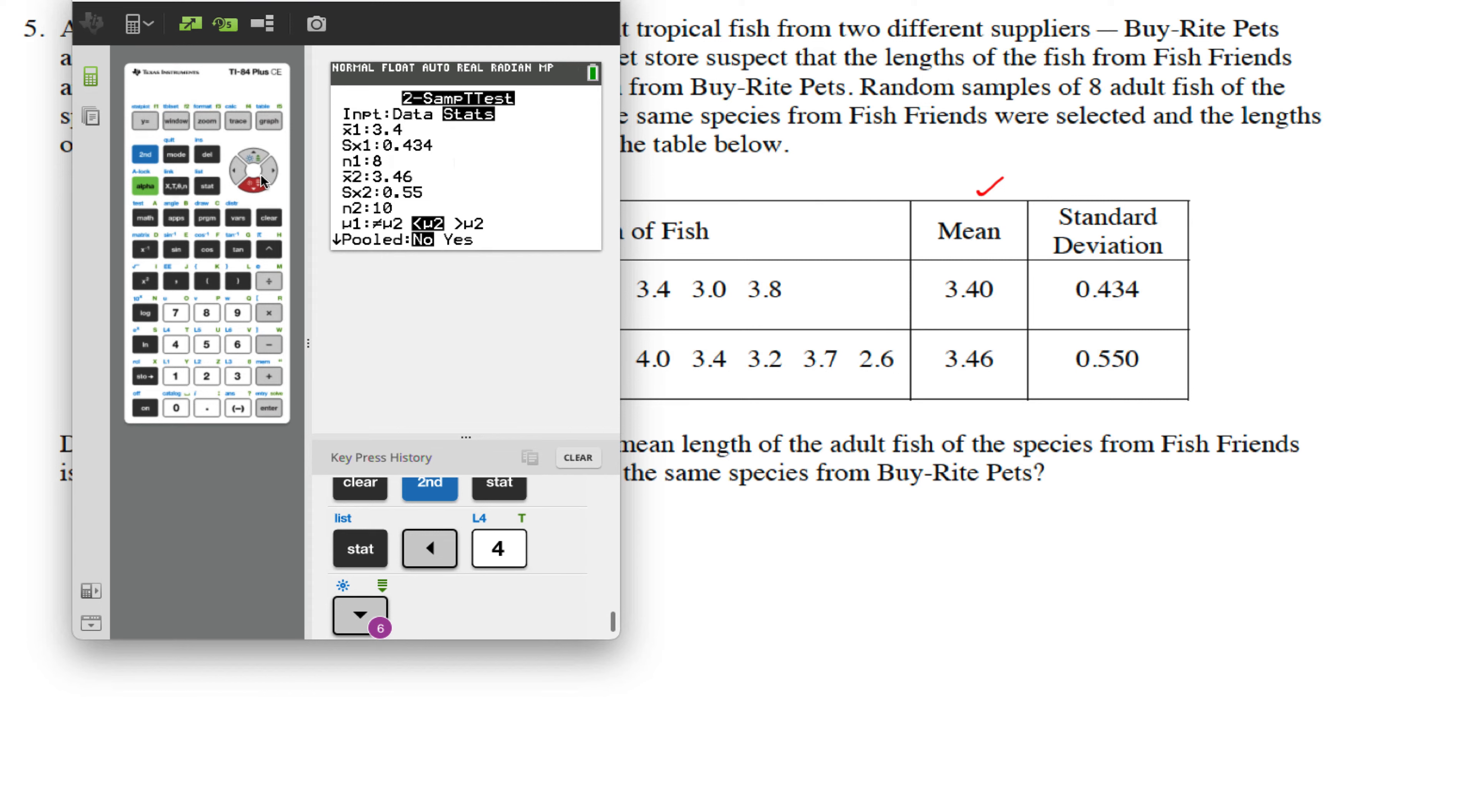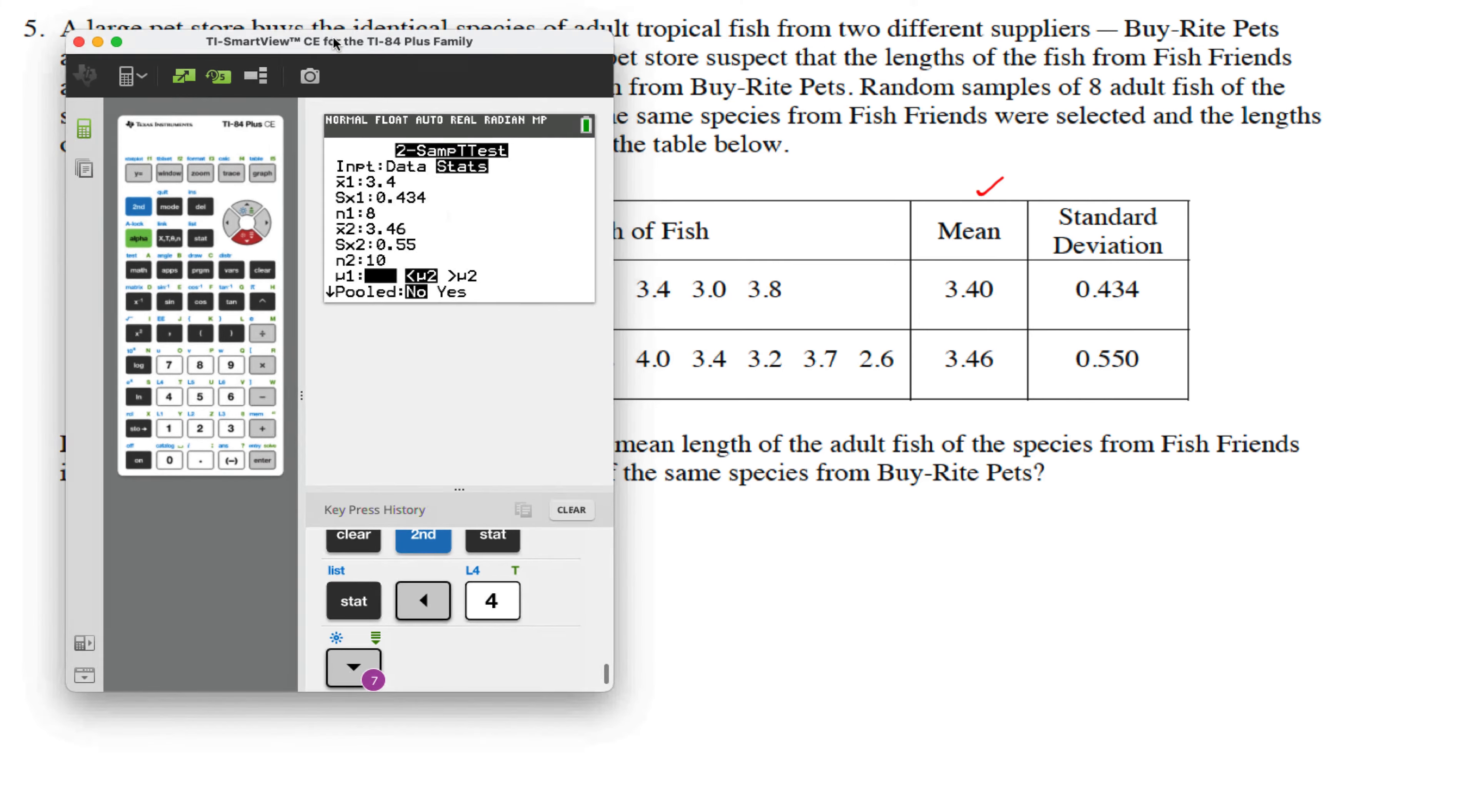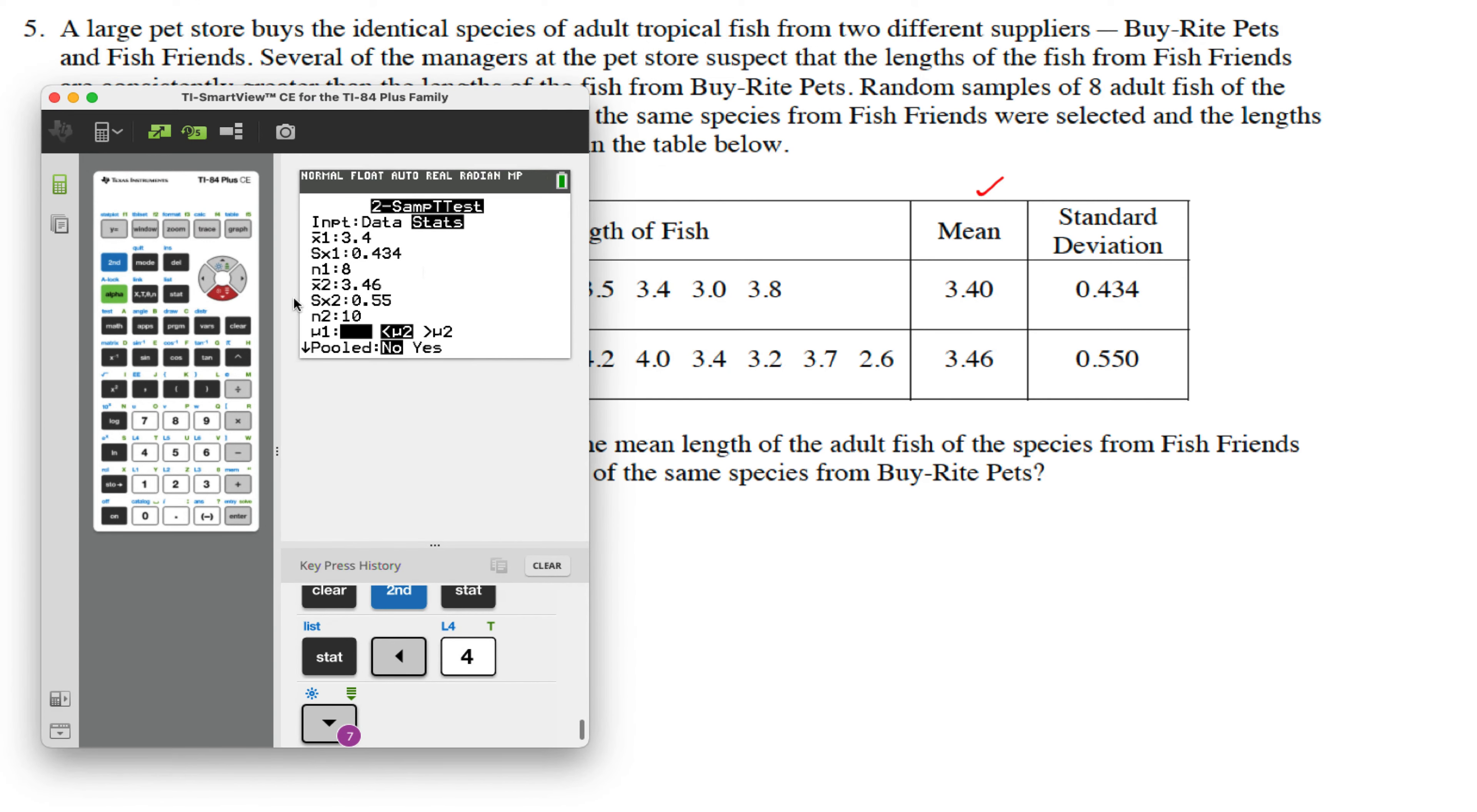We want to know, the way that I've typed it in, is this one down here larger? Is this store greater than that store? Is the length from this store greater than the length from that store? So we want to know if μ₂ is greater than μ₁. It's not 'not equal to' because they're not asking if they're different from each other. They're specifically asking if this one is larger than that one, or the other way to think about it is, is the first one less than the second one? We will not pool. We will never pool here in two-sample t-tests. Let's calculate it.